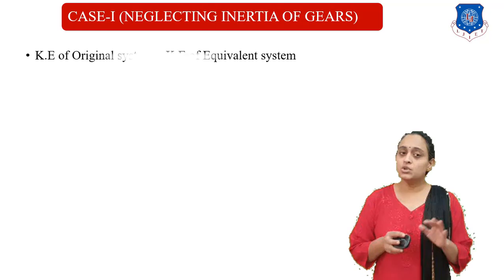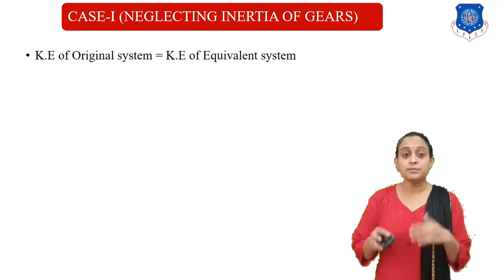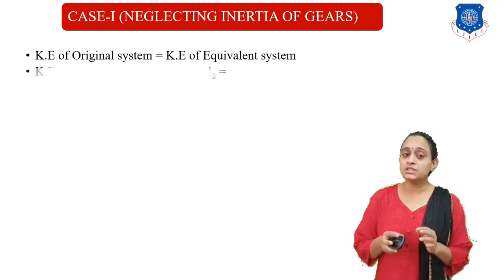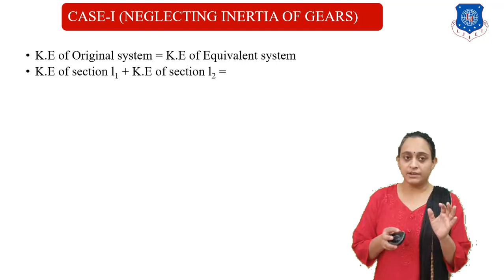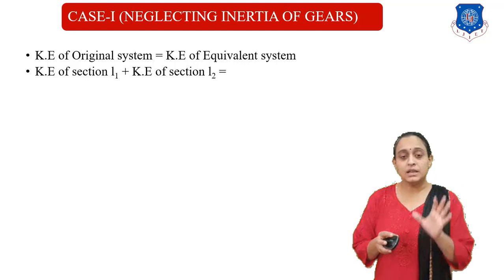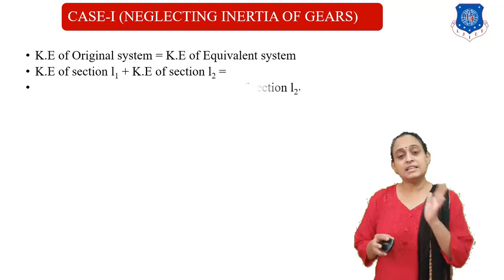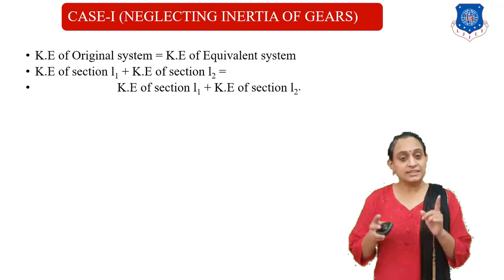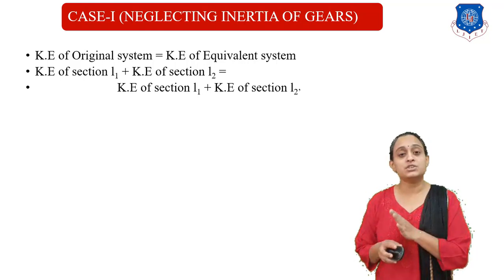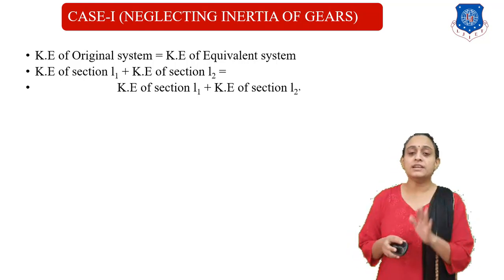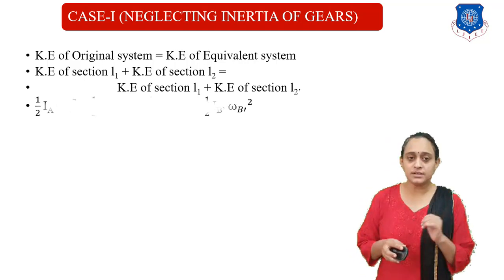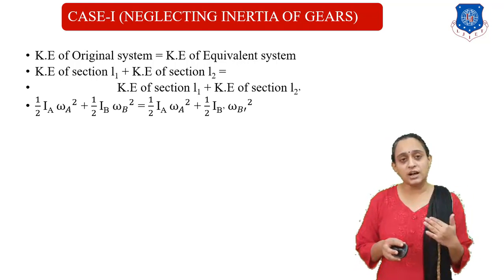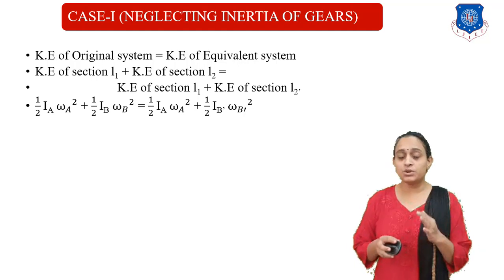For the two-rotor system, let us compare the kinetic energy of the original system with the kinetic energy of the equivalent system. In the original system, kinetic energy equals KE of section L1 plus KE of section L2. In the equivalent system, KE of section L1 remains the same, but there is a change in KE of section L2-dash. The kinetic energy is one-half Ia omega-A squared for rotor A.